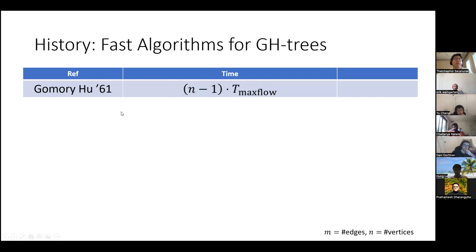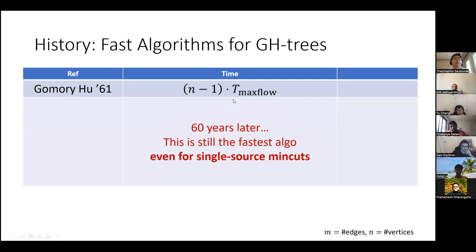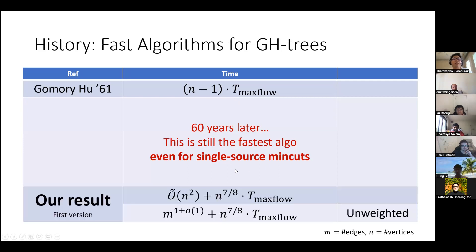Gomory-Hu trees are interesting and useful, so naturally we want a fast algorithm. Sixty years ago, when Gomory and Hu introduced it, they also gave an algorithm taking n calls to max flow. This is non-trivial: while all-pairs min cut naively requires n² max flow calls, this takes only linear many. And for 60 years, this remained the fastest algorithm, even for the simpler problem of single-source min cut.